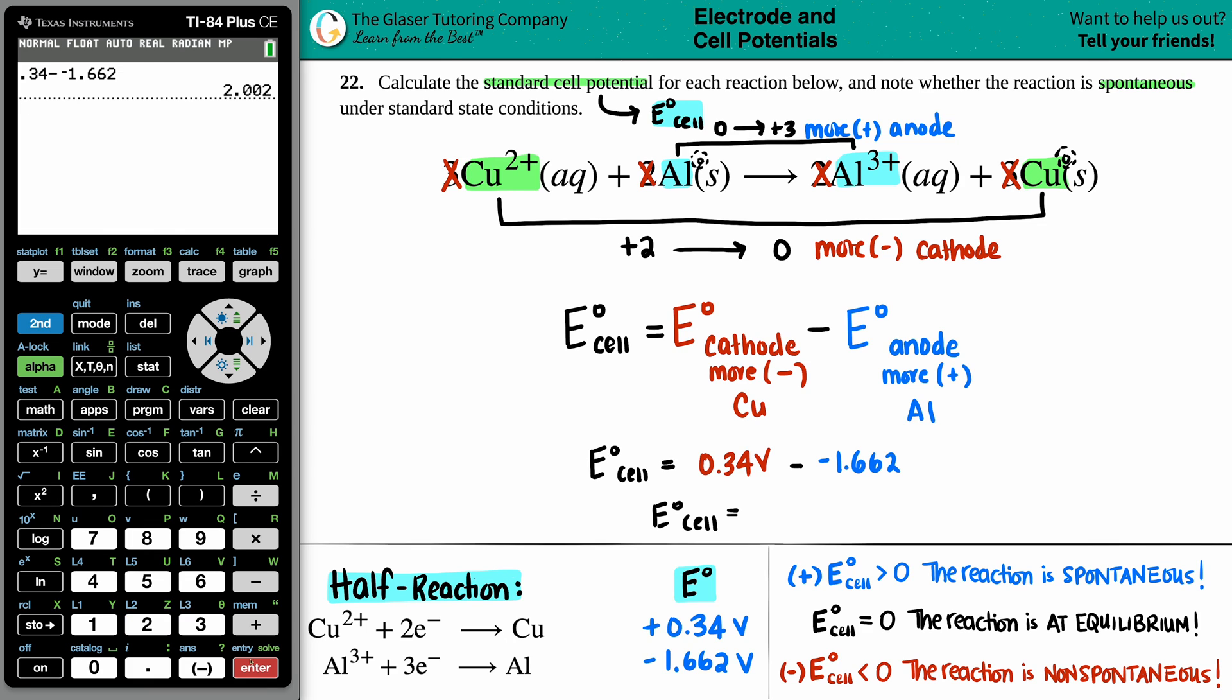And all the math looks good. So we got a two point. And technically, I can only go out to the hundredths place here. So it's going to be 2.00 volts. And that is your standard cell potential.